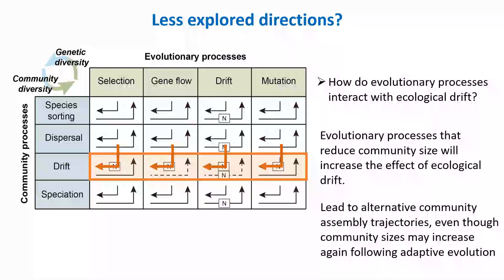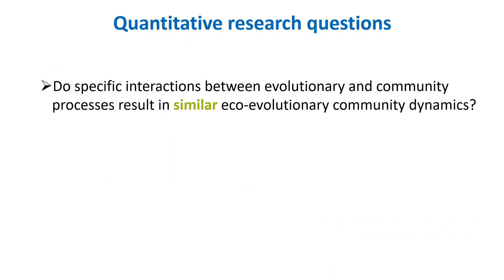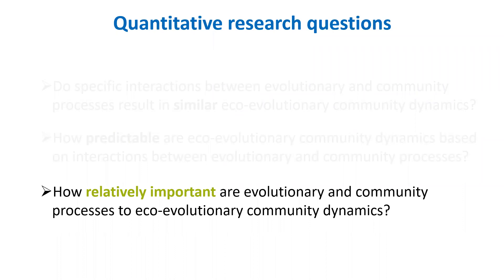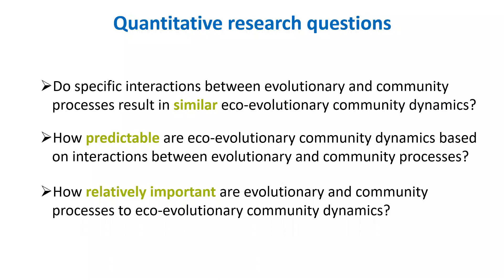I now want to focus on three quantitative research questions. First: if specific interactions between evolutionary and community processes would result in similar eco-evolutionary community dynamics. Second: how predictable are eco-evolutionary community dynamics based on the interactions between these processes? Third: how relatively important are evolutionary and community processes to eco-evolutionary dynamics? I highlight the words similar, predictable, and relatively important, and will go into more detail on each.